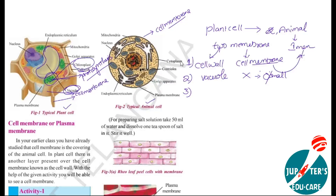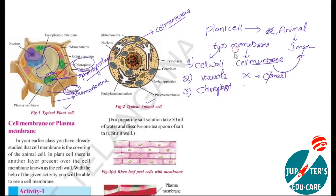In the animal cell, cytoplasm, centrioles, Golgi apparatus, and other different organelles are present — but not chloroplast. So chloroplast is present in plant cell, but in animal cell, there is no chloroplast.